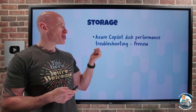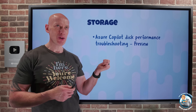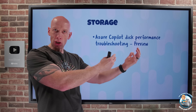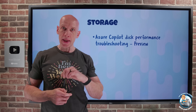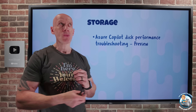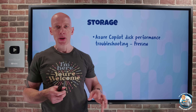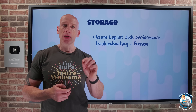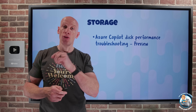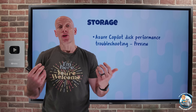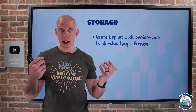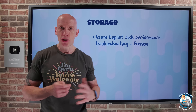On the storage side, Azure Copilot now has disk performance troubleshooting in Preview. Azure Copilot is there to help with your interactions with Azure. The disk performance troubleshooting capability uses the metrics available for your disk and its connected VM to help you resolve performance problems and provide optimization guidance. It looks at IOPS and throughput metrics for the OS disk, any data disks, and the connected virtual machine. Once it has that data, you can ask it questions like: why is my VM running slowly, are there any bottlenecks affecting my disk performance, or can I optimize my disk configuration?